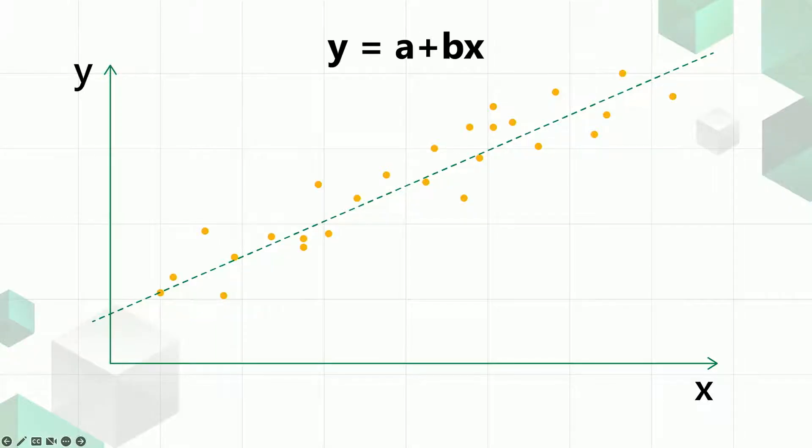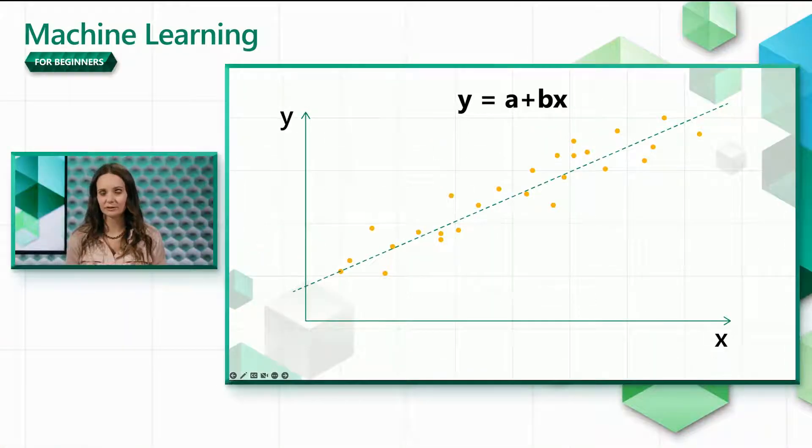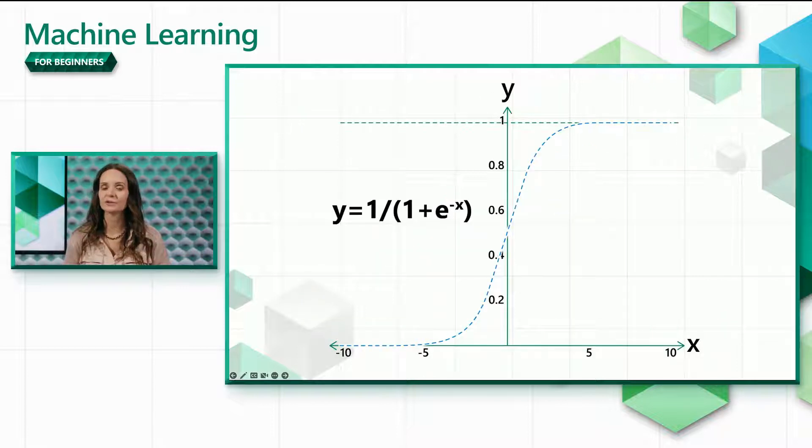That works great for predicting continuous values, but in binary logistic regression we don't want a continuous prediction. Ideally we want our predictions to be constrained to just two values, zero or one. One way to achieve that is to pass the output of a linear function through a sigmoid function.